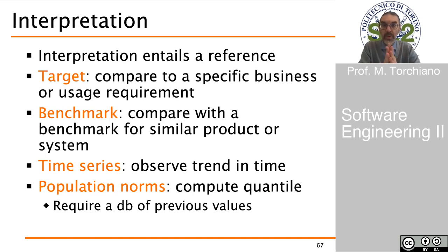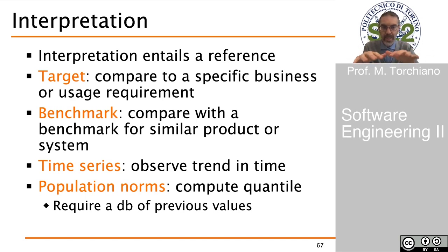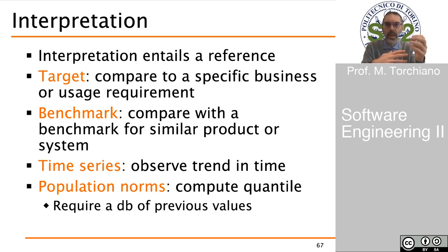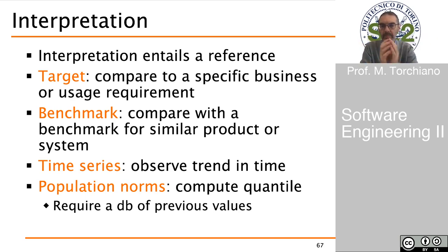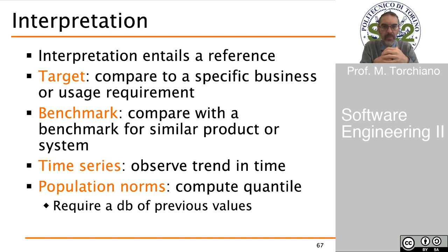When interpreting a measure, we always need a reference. This reference can be a target — a specific business goal or requirement. It might be a benchmark — a reference in our area that we can compare to. We can use a time series, observing the trend and interpreting our value based on historical values, deciding whether we want an increasing or decreasing trend. Or we can compare our value to a population norm, looking at the placement of our measure with respect to quantiles of that population. Of course, we need a database of the full population to perform this kind of interpretation.